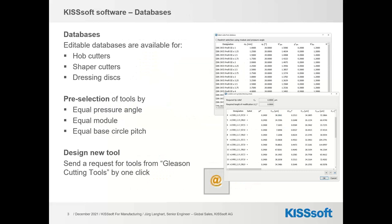As an overview and repetition for many KISSoft users, I want to give a summary as an introduction. There are databases available in KISSoft for hob cutters, shaper cutters, and dressing discs. We also have a pre-selection of tools by pressure angle, module, or base circle pitch. And when you design a new tool and would like to send a request, you can do this via an email button in the KISSoft software — this was added maybe two or three years ago.